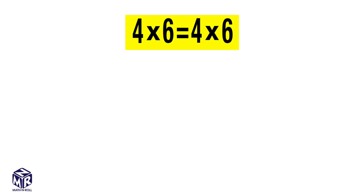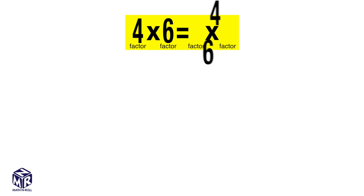In this example, 4 and 6 are the factors. We can change the order of the factors without changing the product. 4 times 6 and 6 times 4 both equal 24.